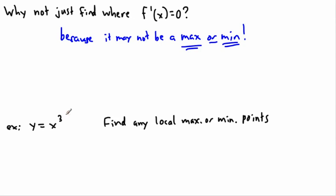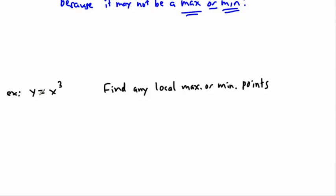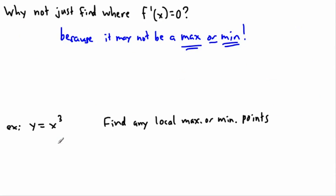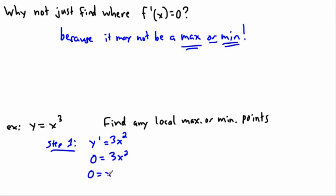Here's a very simple example: y = x³. We want to find the local max or min. Step one: find where the derivative is equal to zero. The derivative y' = 3x². Setting that equal to zero: 0 = 3x². Dividing by 3 gives 0 = x², and taking the square root gives x = 0. So x equals zero — that's our critical point.